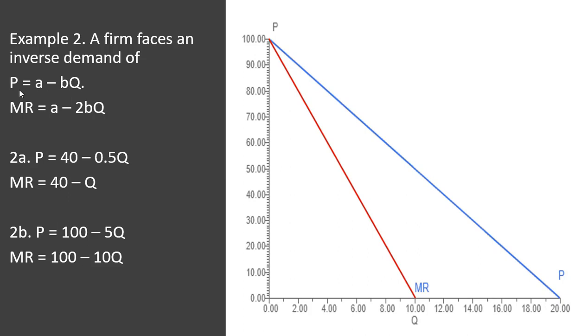Marginal revenue will look like the price equation, except the slope term here is going to be twice as steep. So instead of minus B, it's minus 2B times Q. So doing some examples here.